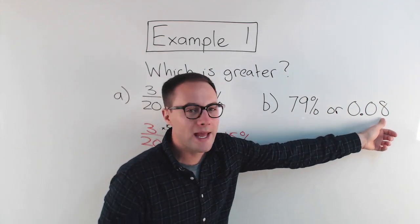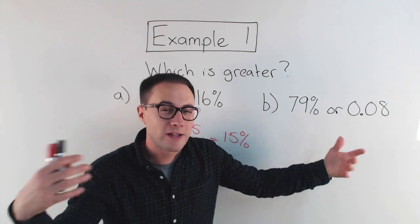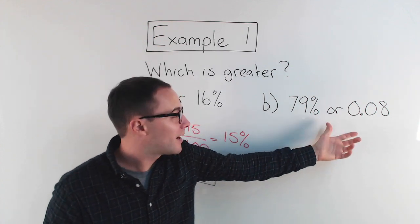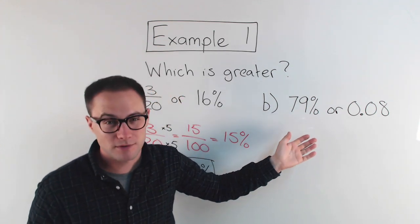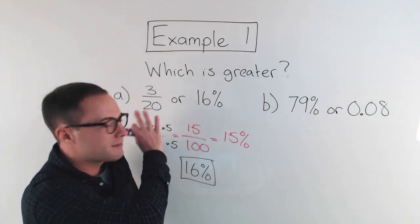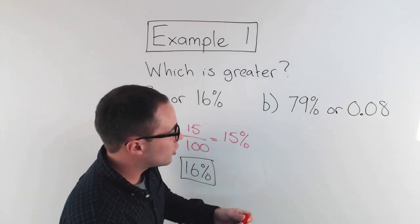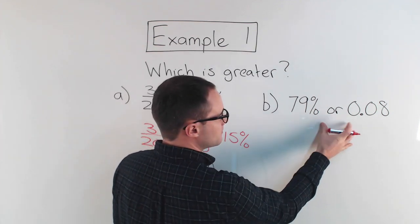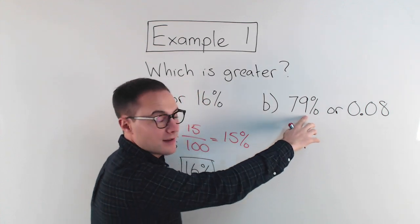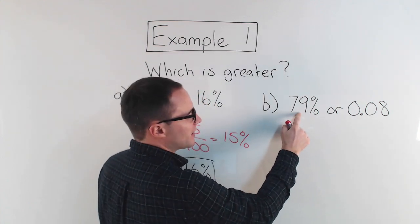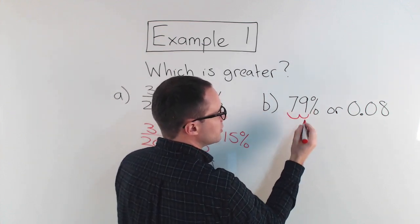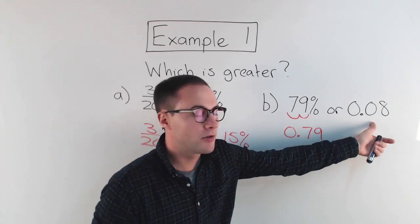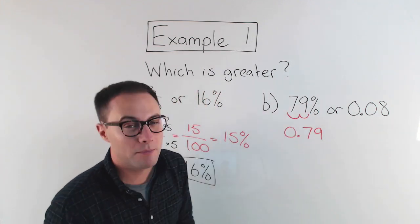Let's try Part B: seventy-nine percent or zero point zero eight. In this case, I can make both of these percents fairly easily, and I could also make them both decimals quite easily — either one works. Let's compare them as decimals: to convert seventy-nine percent to a decimal, move the decimal point twice to the left, giving zero point seven nine. Zero point seven nine is greater than zero point zero eight, which means seventy-nine percent is greater.